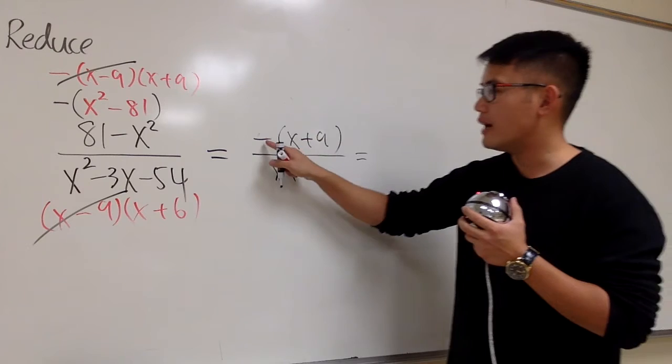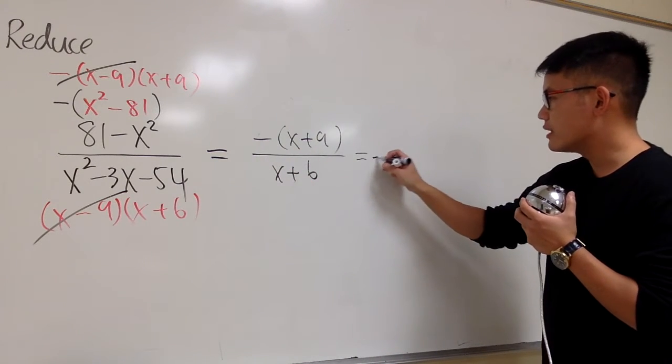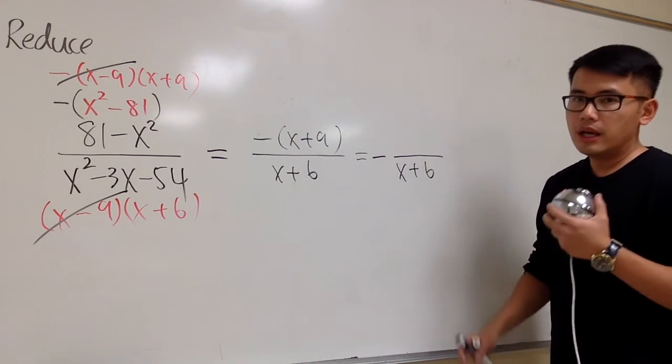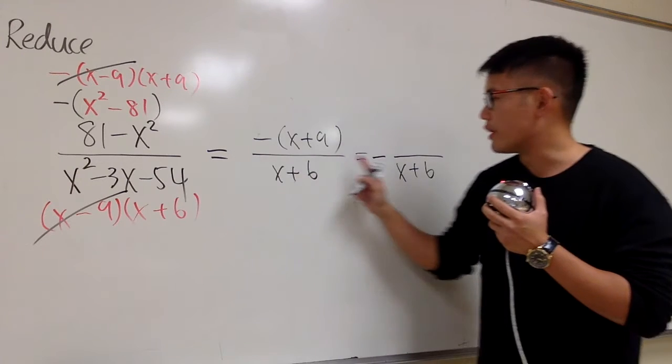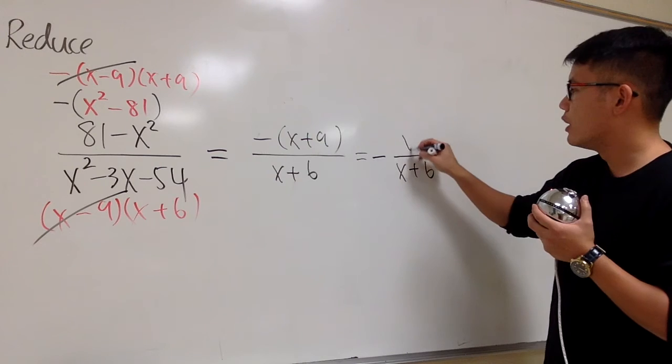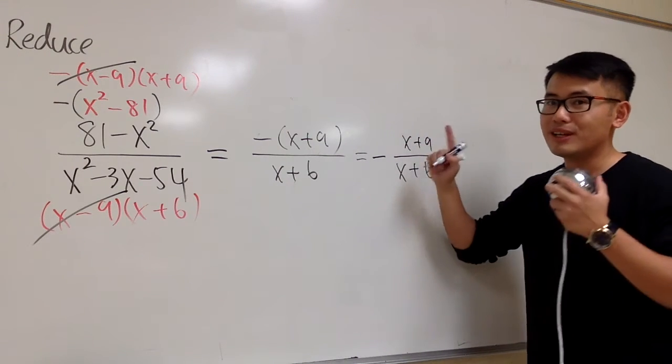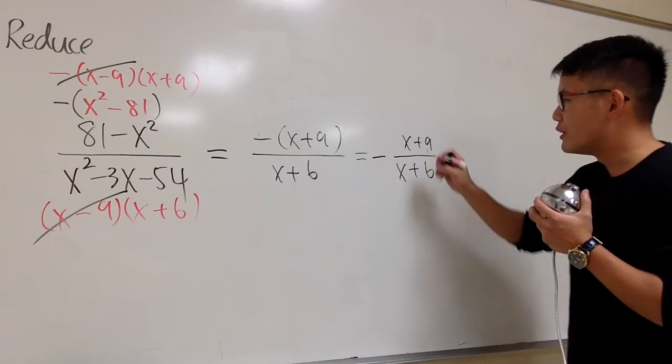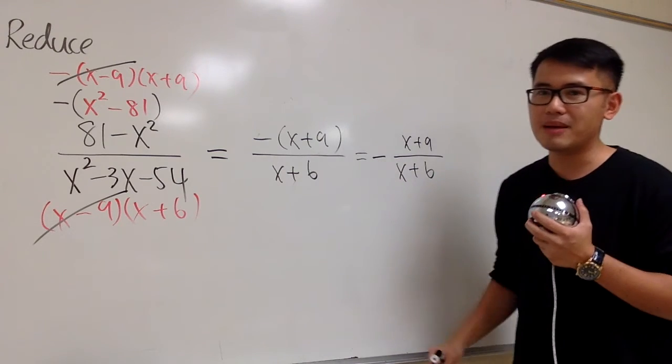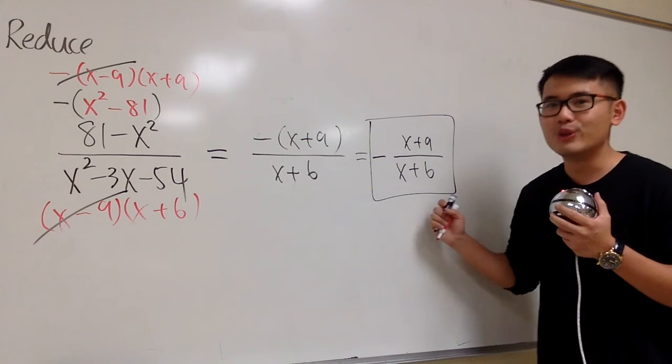Well, sometimes, we like to have the negative in the front. So we can also write this as negative, and then the denominator stays x plus 6. And when we bring the negative to the front like this, on the top, we are just going to have x plus 9. You don't need to put down this parenthesis. It becomes invisible. But you really have to remember, there is that invisible parenthesis. This and that means the same. And this is how I would like to present the answer to you guys.